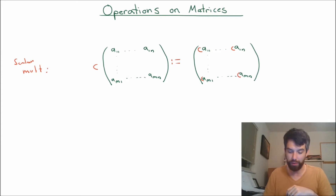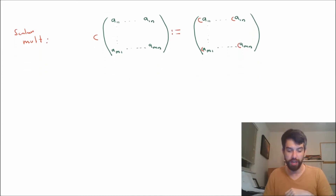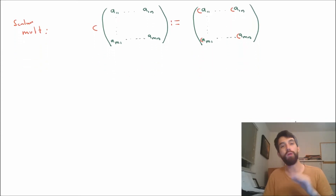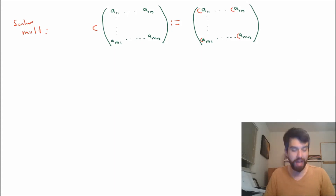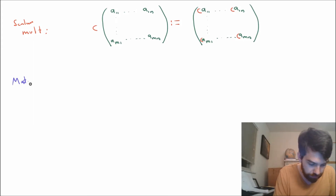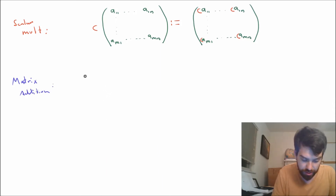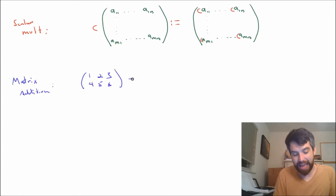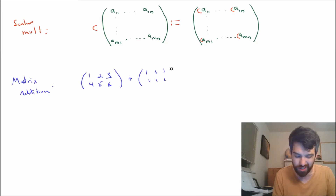What else can we do? We've got scalar multiplication, and you can probably imagine we also have matrix addition. To illustrate this, let's use concrete matrices. Take the matrix 1, 2, 3, 4, 5, 6, and add it to the matrix 1, 1, 1, 1, 1, 1. We want a definition of how to add these two things together.